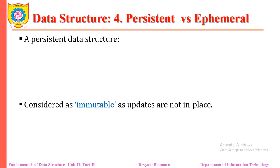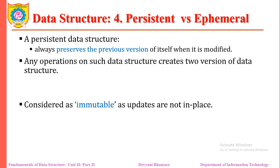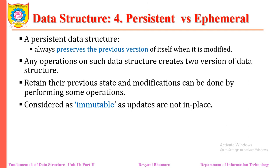Now we come to persistent and ephemeral data structures. If I take one state, make some changes, and due to that change my state is modified such that I am no longer able to retrieve the previous state, then it is called an ephemeral data structure. But if we can get the previous state back, that is called a persistent data structure. A persistent data structure preserves the previous version of itself when data is modified — any operation creates two versions. It retains the previous state, and updates are considered immutable, meaning updates are not done in place.